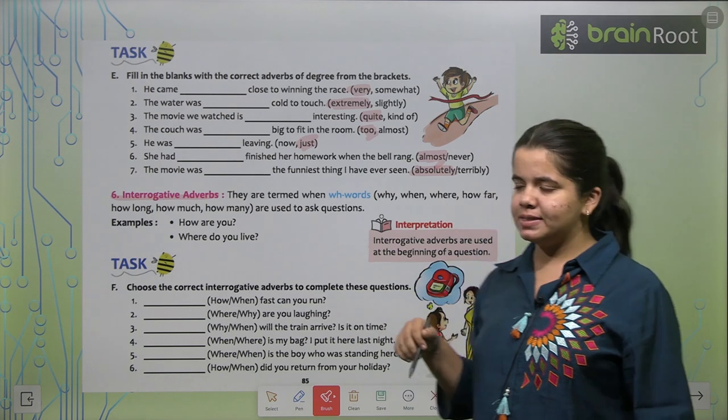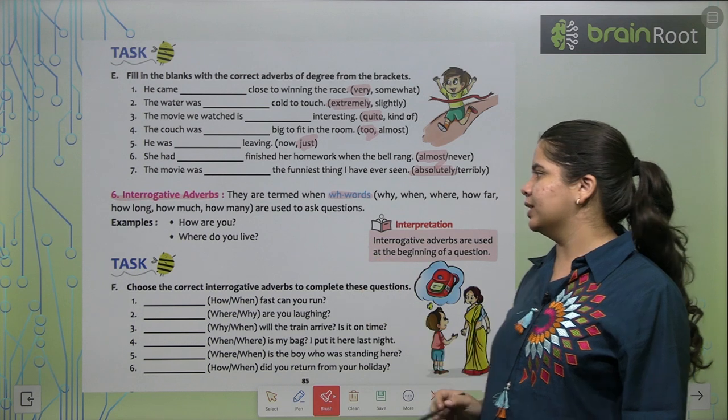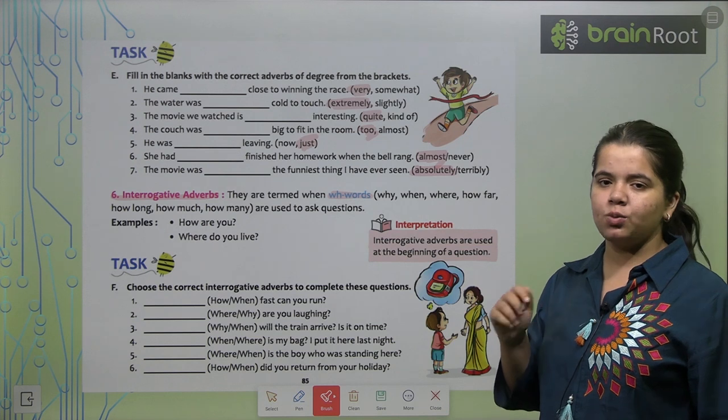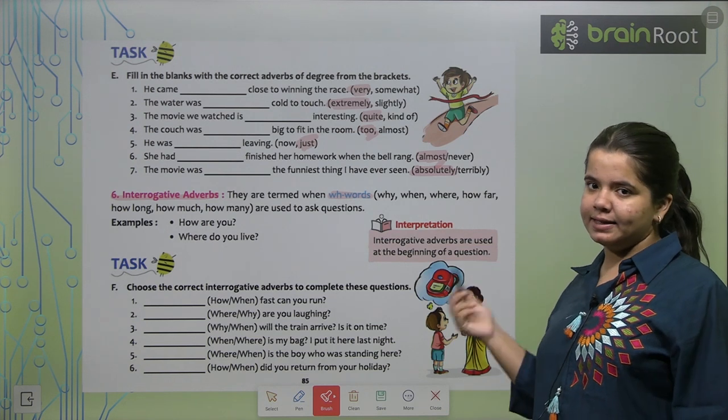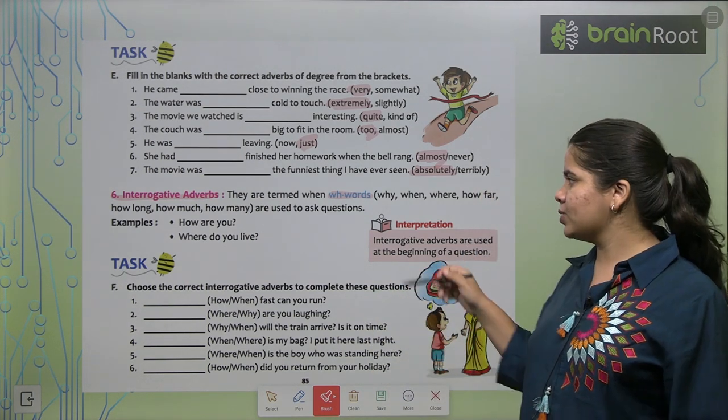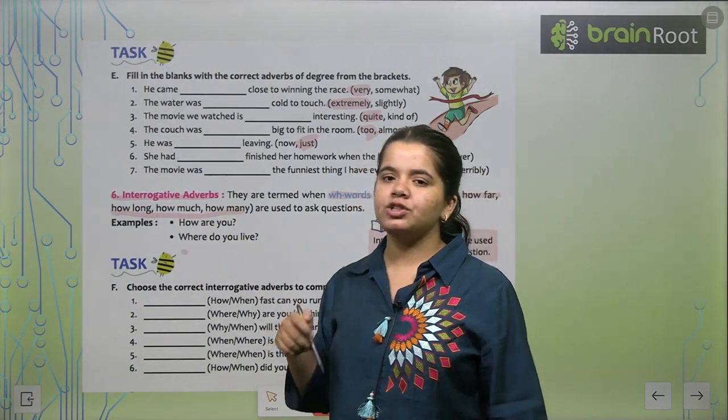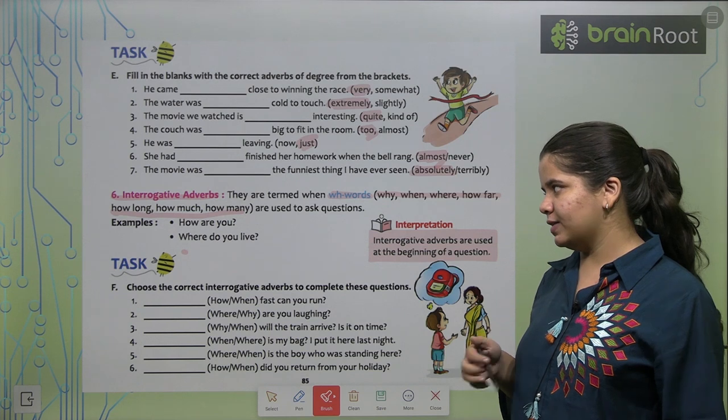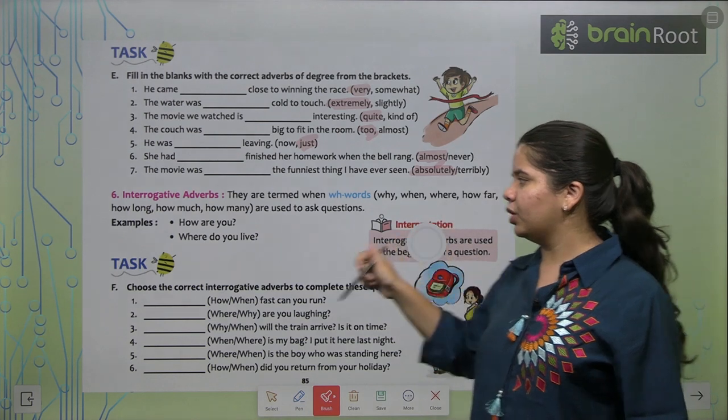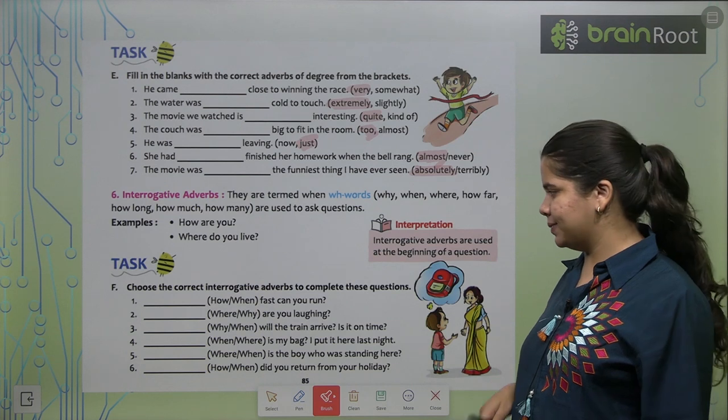Next we have interrogative adverbs. Let's see. They are termed as WH words. Interrogative - you all have read many chapters on this. WH words - what, when, why. These are all our interrogative words. And our interrogative adverbs can be why, when, where, how, how long, how much, how many. These are all our interrogative adverbs. In terms of examples we can see, how are you? Where do you live? So these are some examples of interrogative adverbs.